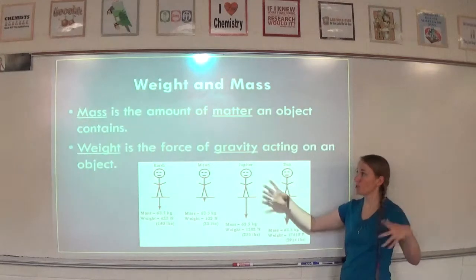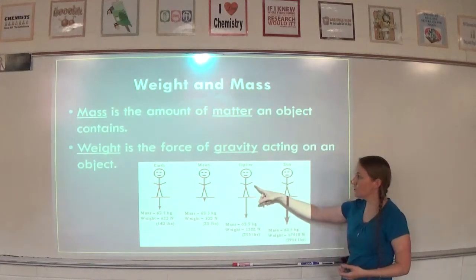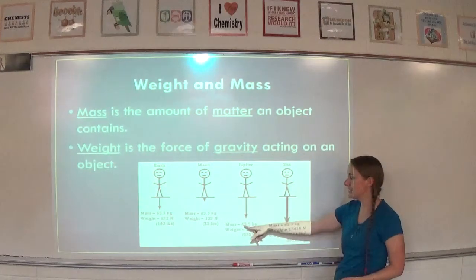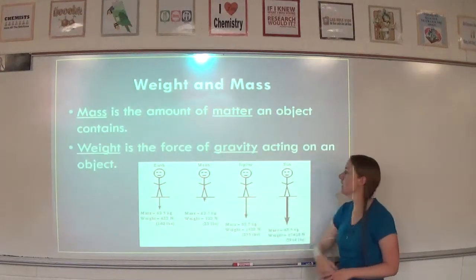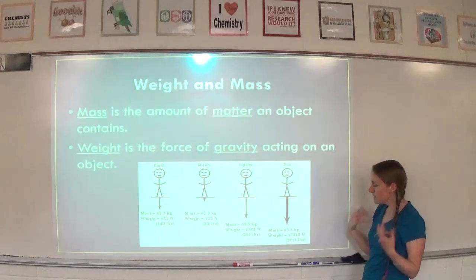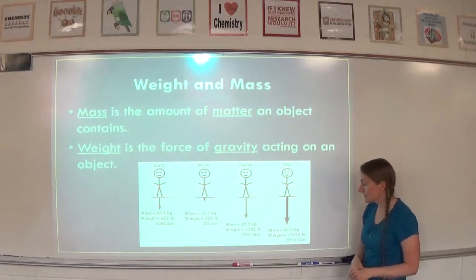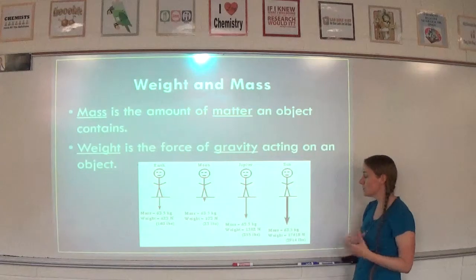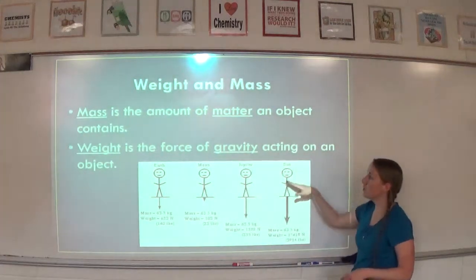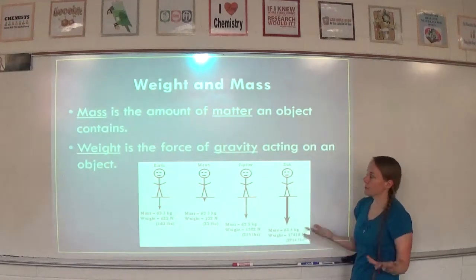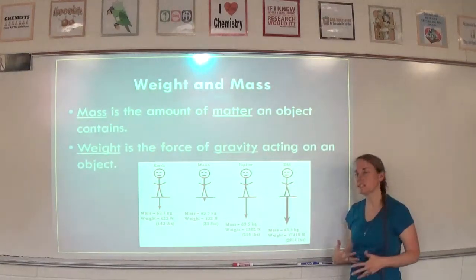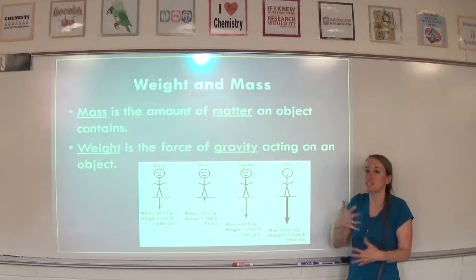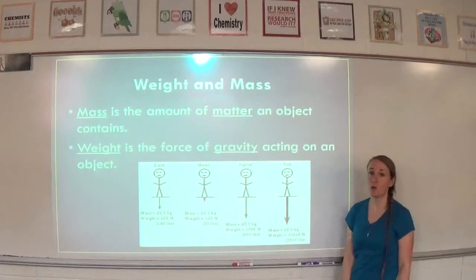If you go to Jupiter, which is much larger than Earth or the moon, the larger the object the more gravity it has. On Jupiter the person's weight increases to 1,582 Newtons — but did he get super fat? No, his mass is still 63.5 kilograms. On the Sun, which is even bigger than Jupiter, his weight balloons to 7,418 Newtons — equivalent to about 3,914 pounds — but his mass is still 63.5 kilograms. So really, when people say they want to lose weight, they actually want to lose mass — they want to physically get smaller, because going to the moon doesn't make you look any different.